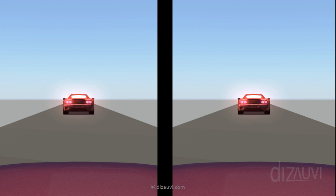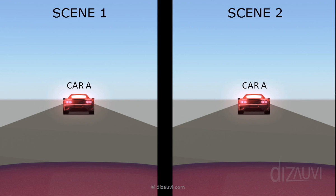Consider these two scenes: the first one on the left and the second one on the right. In both these scenes, we have a red car in front — let's call it car A — and a purple car behind it, let's call it car B. Car B has a camera mounted on top which is acting as an observer. You can imagine that you are sitting on top of car B and observing the motion of car A in front of you, which is what you will see through the camera.